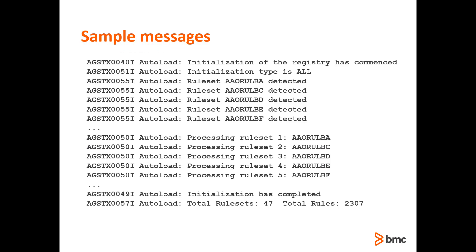Messages to show the progress of the Autoload will be presented in the PaaS job log. Here are some of the messages that you will see. The first set will identify all the rule sets that it intends to load, and then you will see each rule set and its rules loaded in succession. The final messages indicate that the process is completed and provide a summary of what was loaded. In this example, the total elapsed time was 16 seconds to load 47 rule sets and 2307 rules.